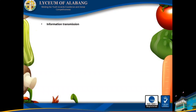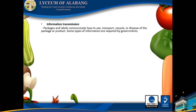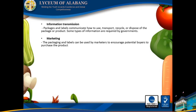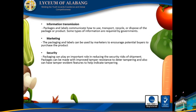Information transmission. Packages and labels communicate how to use, transport, recycle, or dispose of the package or product. Some types of information are required by governments. Marketing: the packaging and labels can be used by marketers to encourage potential buyers to purchase the product. Security: packaging can play an important role in reducing the security risk of shipment. Packages can be made with improved tamper resistance and can have tamper-evident features to help indicate tampering.